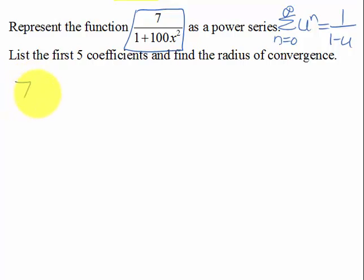So I'm going to write this as 7 times 1 over 1 minus, it was a plus, so it's going to be minus a minus, and then I have 100x squared, so I'm going to write that as 10x, the quantity squared. So all of this here will be my u.